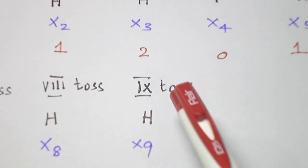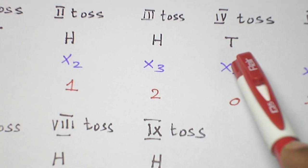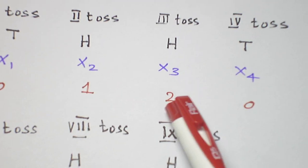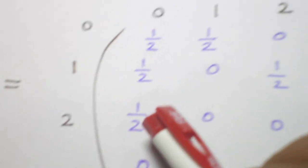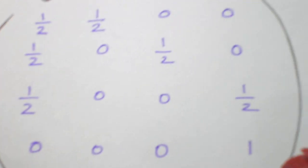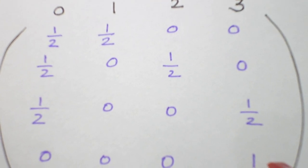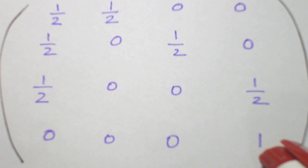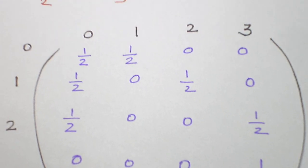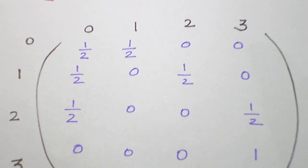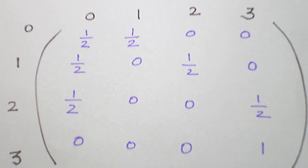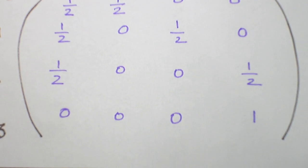From state two it may move to state three if we get a head — probability one-half. And from state two it may move to zero if we get a tail — probability one-half. If we reach state three, the chain will remain at state three itself forever with probability one. It is an absorbing state. So this is the transition probability matrix of the given problem. Let us see another problem in the next class. Thank you.